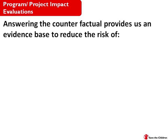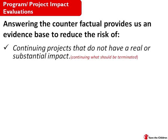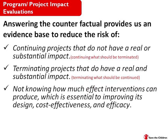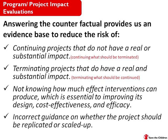Using more rigorous designs with control or comparative groups helps us reduce risks. The first risk is continuing projects that do not have a real or substantial impact — projects that should have been terminated. The second is terminating projects that do have a real impact that we may not have measured — ending good projects that should be continued. The third risk is not knowing how much effect our activities can produce over time, which is essential for improving design and cost effectiveness. Finally, less rigorous designs may produce incorrect or inaccurate results that don't provide good guidance on whether a project should be replicated or scaled up.